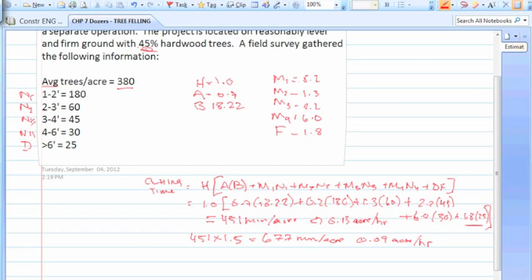Then the only second part of this problem is that they wanted the items piled. So we're going to do the piling time. Really no difference. In this case, the equation is basically the same, but there's no hardwood factor because we're not actually cutting through the woods, so the type of wood doesn't matter. So it just starts with B by itself: M1N1, M2N2, M3N3, M4N4, DF. That's it.